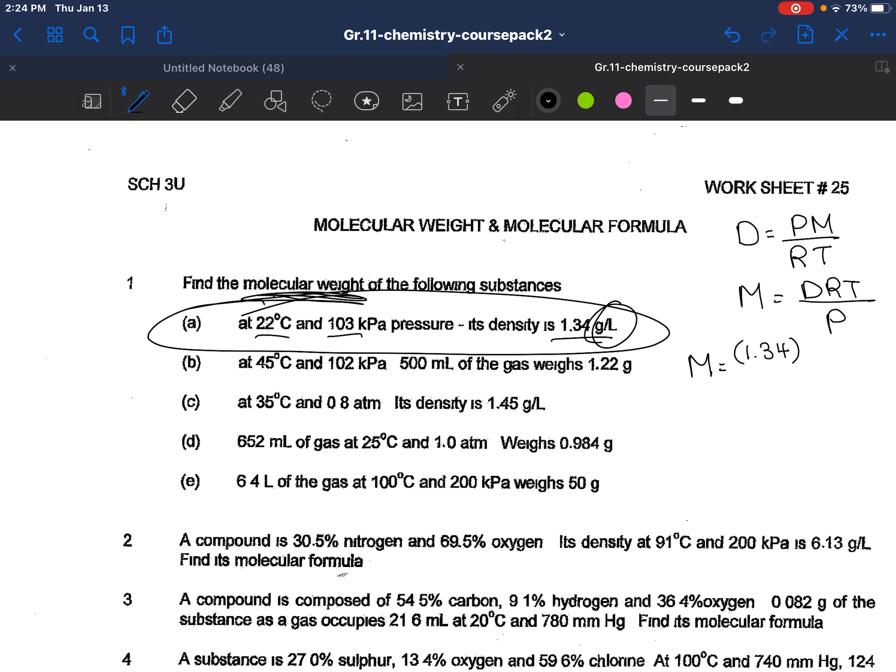All we have to do here is sub in all the necessary information. So that would be 1.34 times R. We're looking at kPa right here, so R will be 8.31 times... Oh, don't sub that in there. Make sure you turn that into Kelvin. So that would be 295. All that divided by 103 will give you the molar mass for this gas, whatever it may be. Let me just quickly calculate that. 1.34 times 8.31 times 295 divided by 103, and the answer is 31.9 grams per mole. Whatever this is, looks like fluorine gas. It's hard to say.